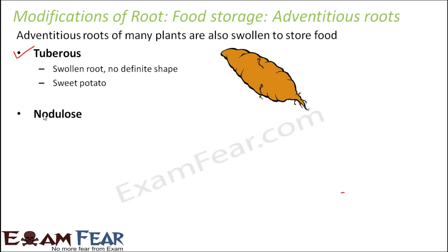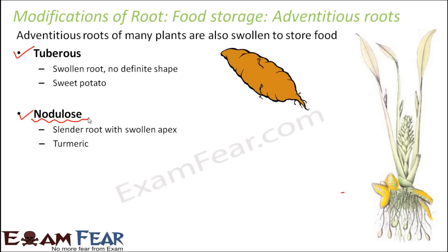The next type is nodulose. The word is derived from 'nodules.' It is a slender root with a swollen apex — the example is turmeric. If you observe turmeric roots, you can see thin roots with a swollen apex. This swollen apex gives the appearance of nodules, which is why they are called nodulose.